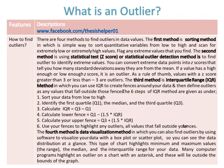The fourth method is the data visualization method, in which you can find outliers by using software to visualize your data with a box plot, so you can see the data distribution at a glance. This type of chart highlights minimum and maximum values, the range, the median, and the interquartile range. Many computer programs highlight an outlier on a chart with an asterisk, and these will lie outside the bounds of the graph.